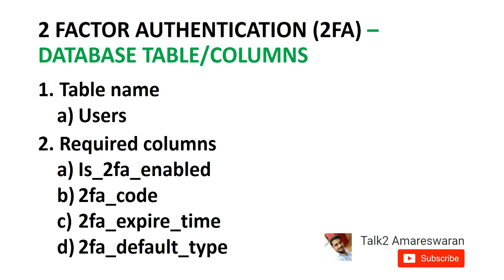In this demo, I am going to show you the database schema design. The table name is 'users'. The first required column is is_2FA_enabled — it is a boolean variable indicating whether 2FA is enabled or not for that user. The next column is 2FA_code; once we send a random code to the end user via mail or SMS, that code is stored in this column.